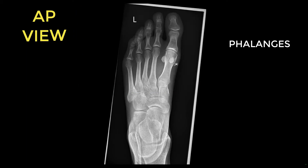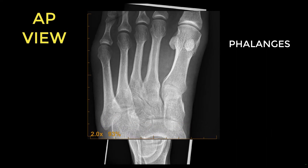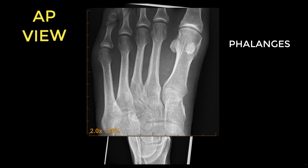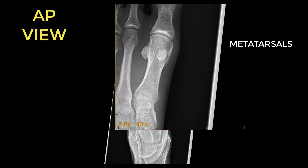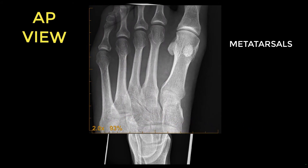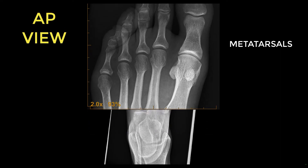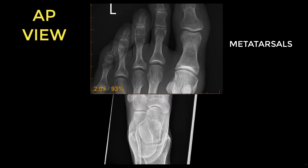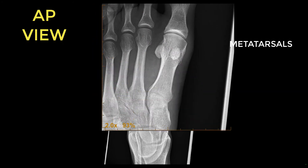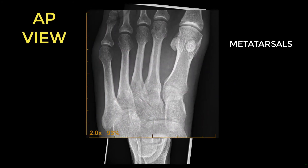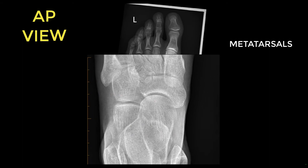As you go proximally, you have these long bones called the metatarsals. There are five metatarsals — one for the great toe, and then the second, third, fourth, and fifth toes. In total, there are 14 phalanges: three for each of the second through fifth toes and two for the great toe, plus five metatarsal bones.